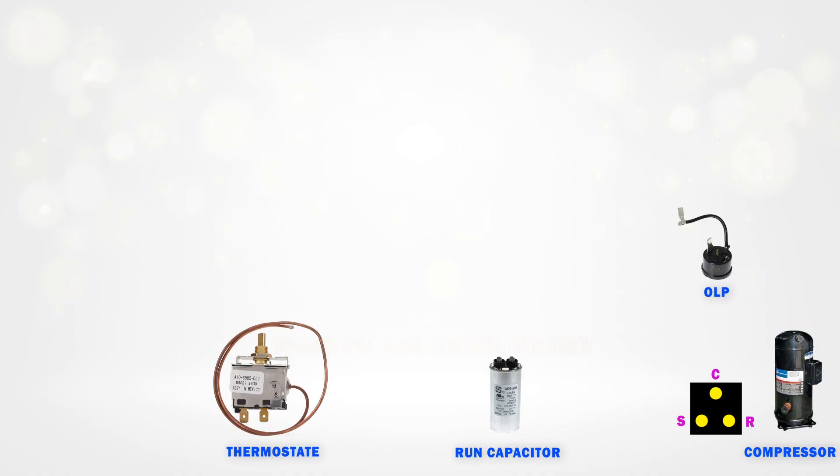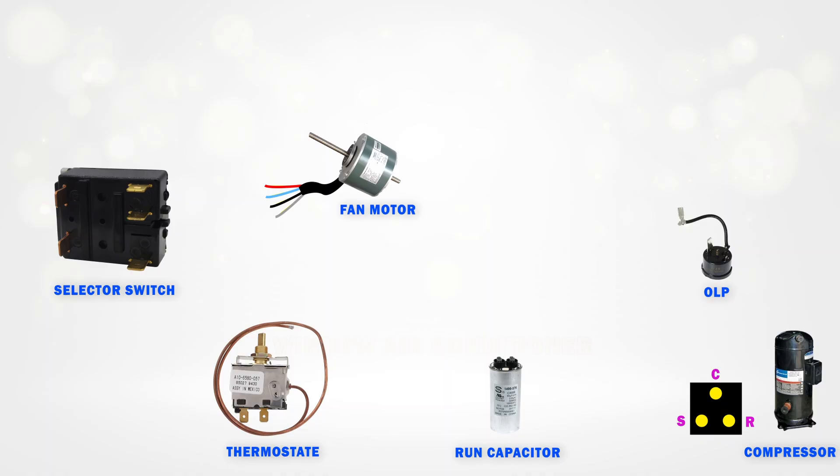Now, let's move on to the fan motor in the window AC. As you can see here, four wires are coming out of the fan motor. Three of these wires are for speed control, because this is a three-speed motor. One wire is for the neutral connection. To control the motor speed, we need a selector switch or speed regulator. This lets us switch between slow, medium, and high speeds.